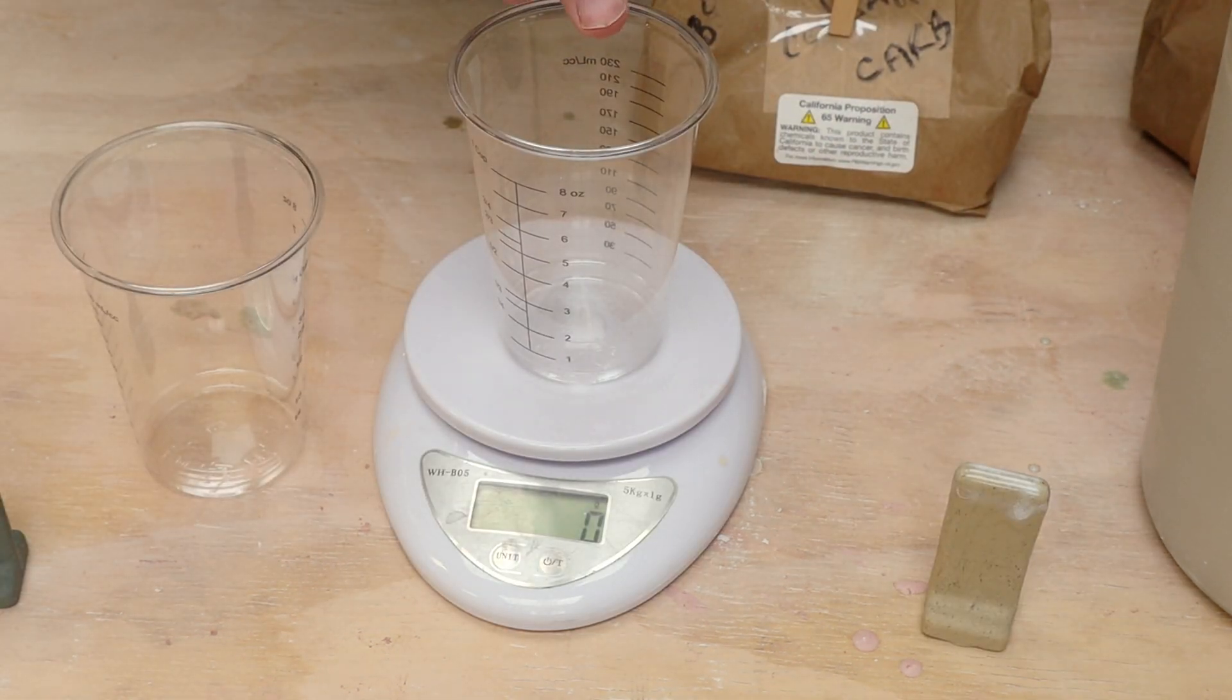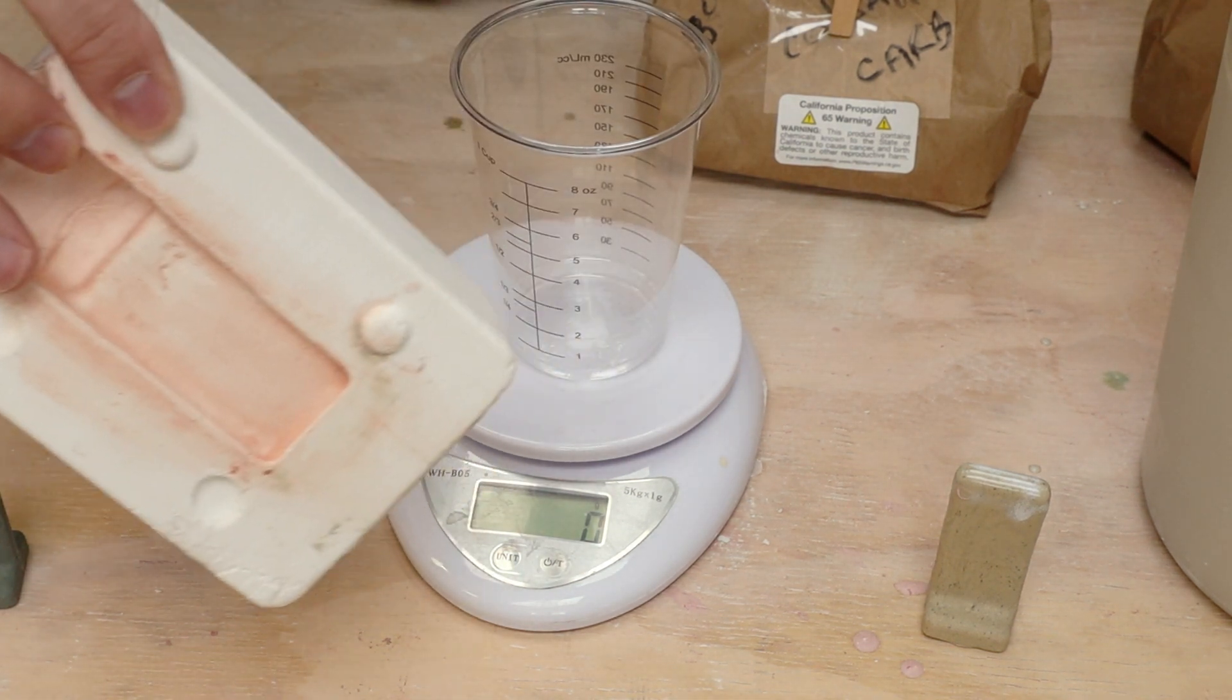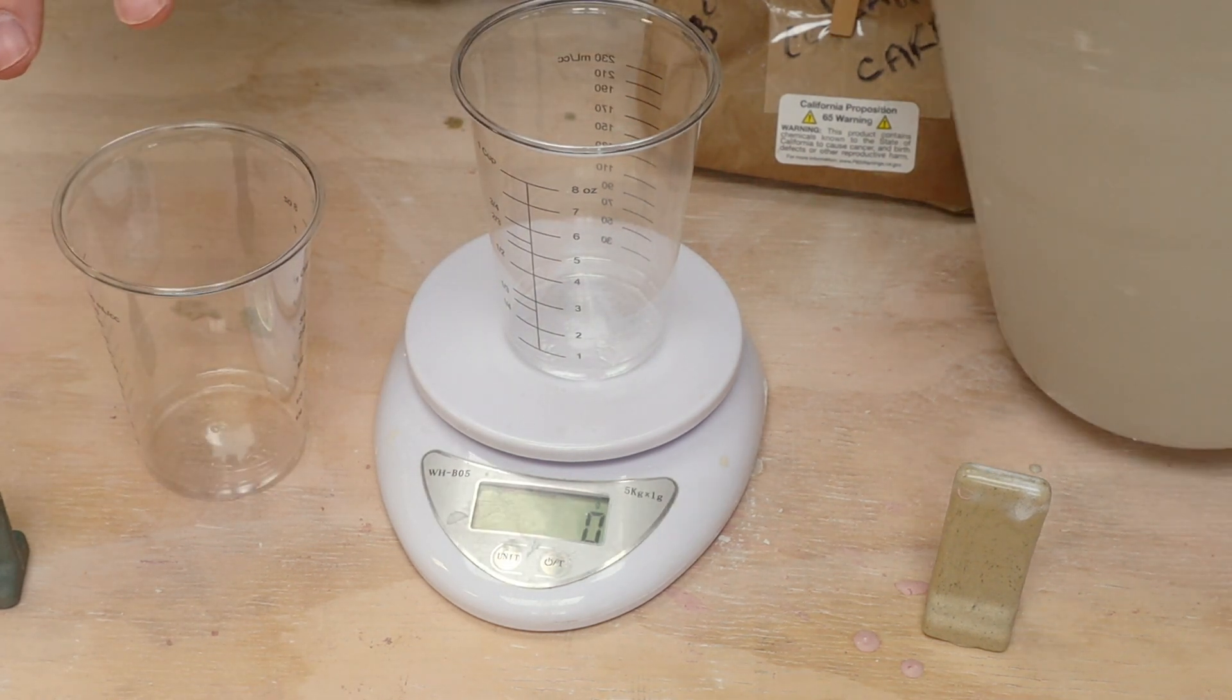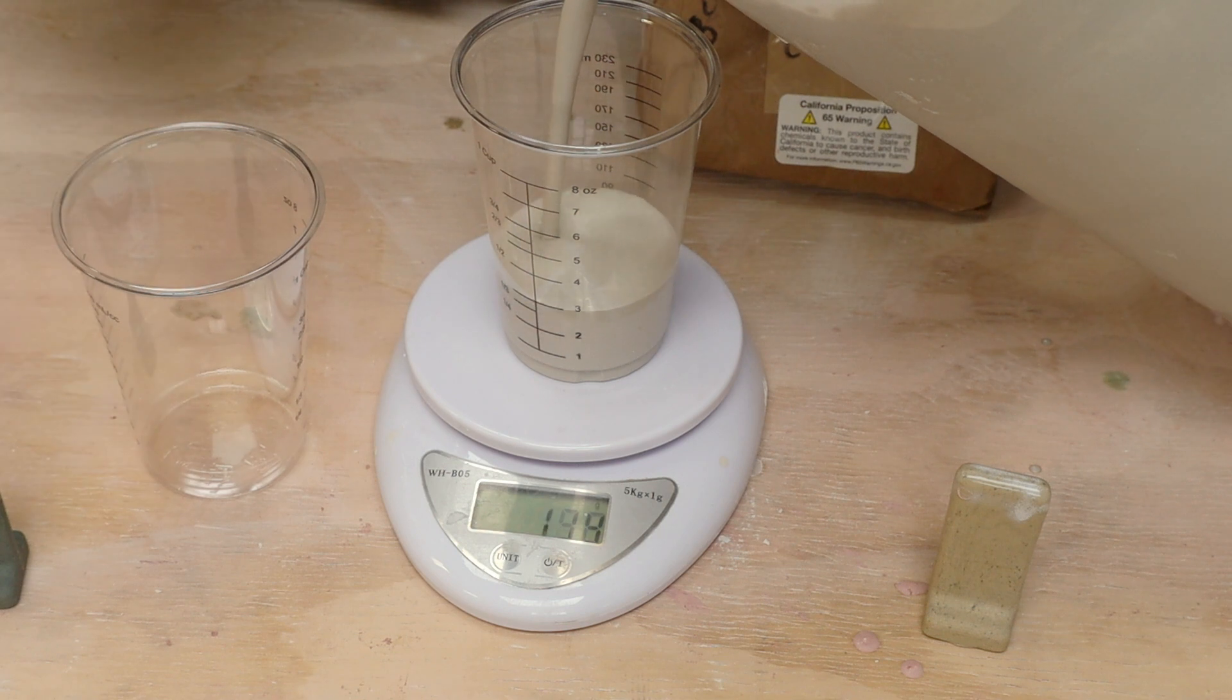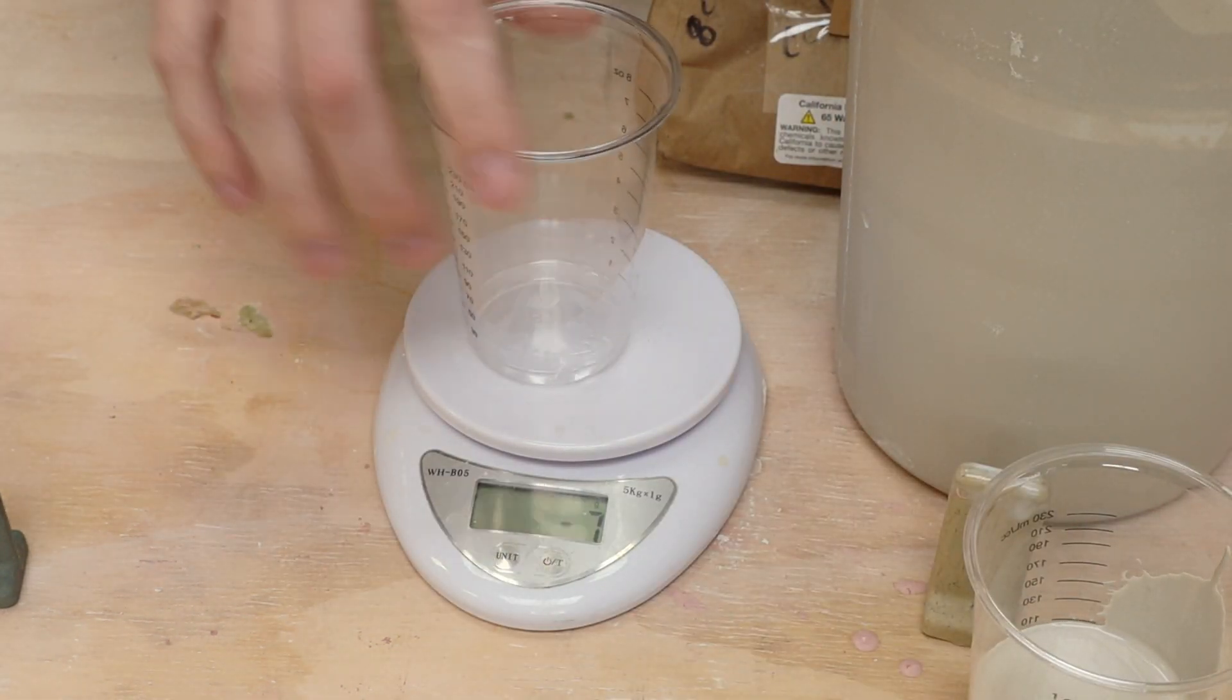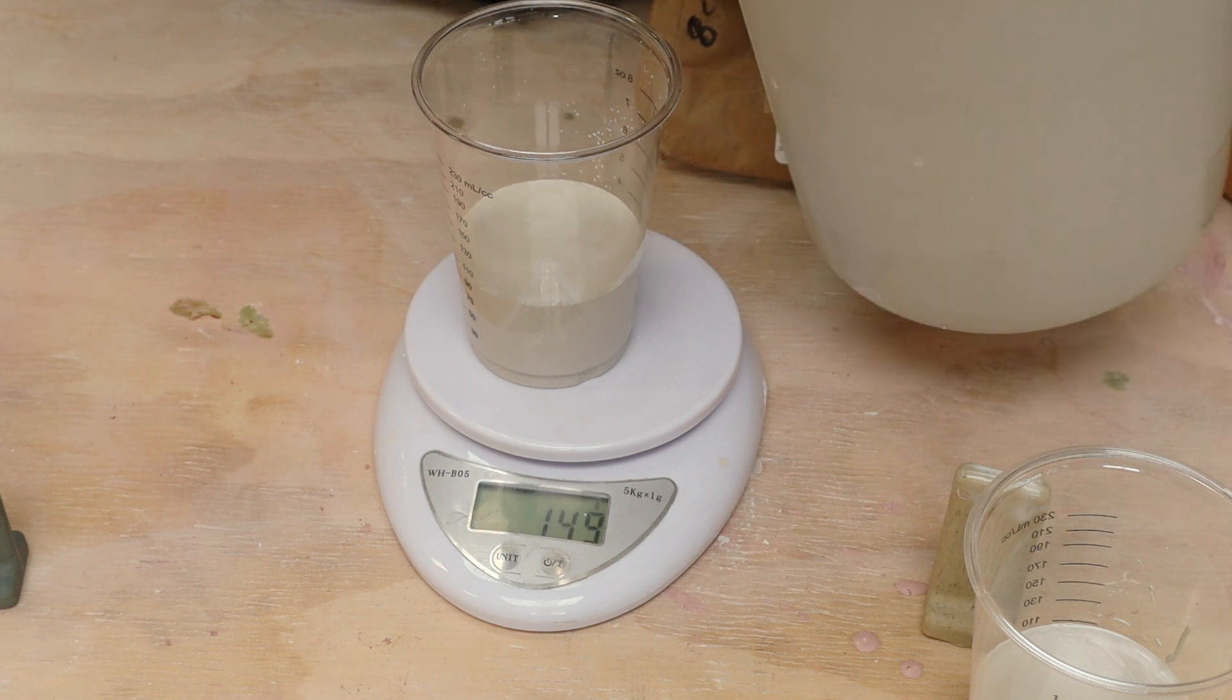So to start with, I want 150 grams of slip in here. My test tile mold here takes 100 grams of slip and I want to make up three batches. So I'll need 150 in here and then 150 in this next one. All right, there's 150 on the nose and the same for this one.